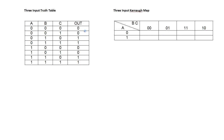Now let's finish filling in the Karno Map by mapping each output from the truth table. The 000 box gives output 0. The 001 box is also 0. The 011 box is 1. The 010 box is 1. The 100 box is 0. The 101 box is 0. The 111 box is 1. And the 110 box is also 1.